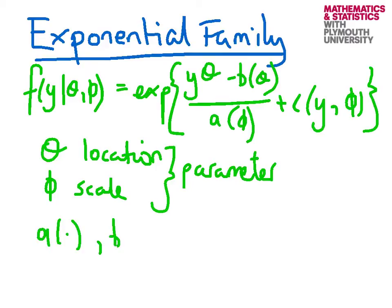Mysterious a, b and c are all known functions of some kind. Provided we can write the density or mass function in this format, we have a distribution that can be considered as coming from the exponential family.